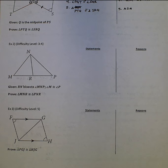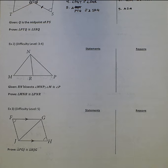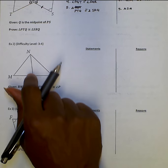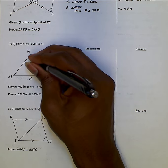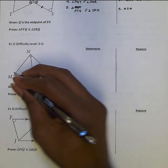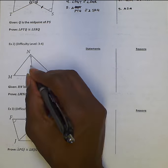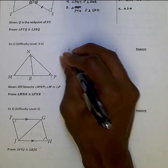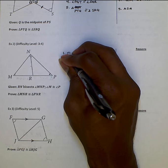Next proof — difficulty level higher. They didn't give me anything marked in the diagram. RN bisects angle MNP, meaning it cuts it in half. Angle M is congruent to angle P, and NR is shared by both triangles. So I'm probably going to prove these congruent by angle-angle-side. Let me go through and make sure I can do that.